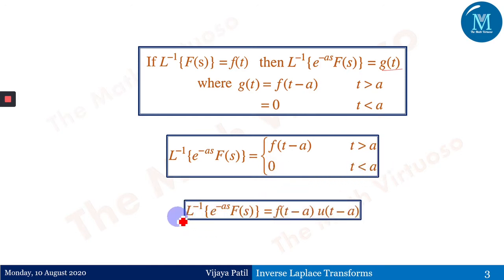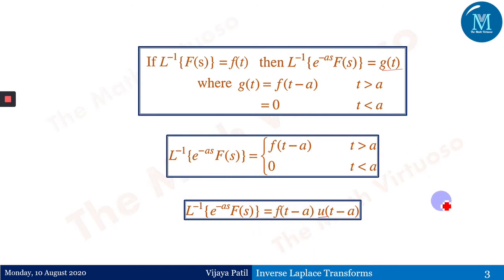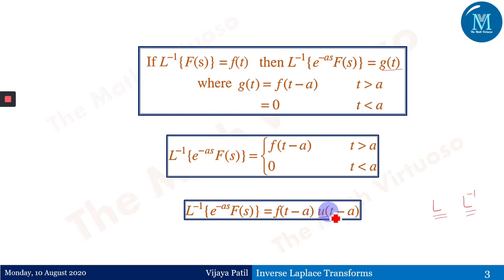This can also be written as: the inverse Laplace of e^(-as)·F(s) equals f(t-a)·u(t-a), where u(t-a) is nothing but the Heaviside unit step function. Since L and L-inverse are inverses of each other, if you know the Laplace transform of a particular function it is easy to find the inverse Laplace. Go and watch my video on u(t-a), that is expressing a given function in terms of the unit step function. This is known as the second shifting theorem.